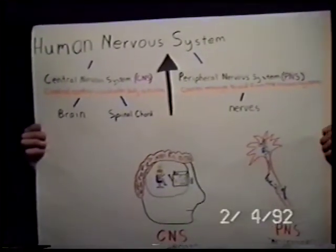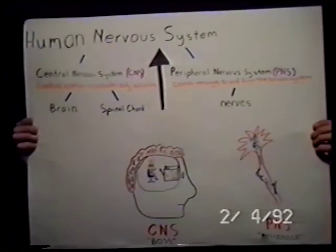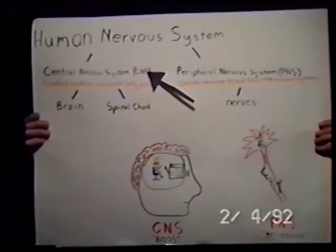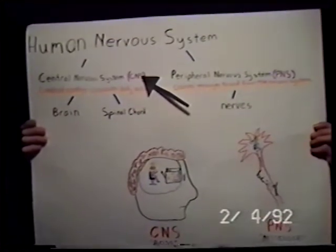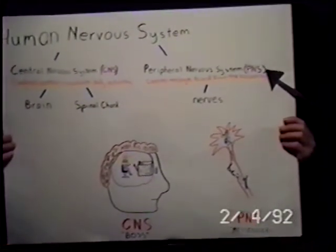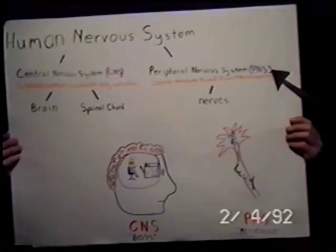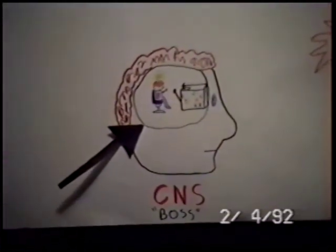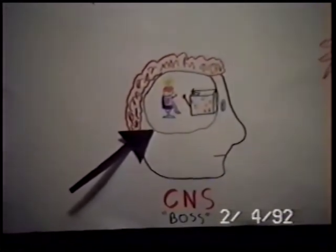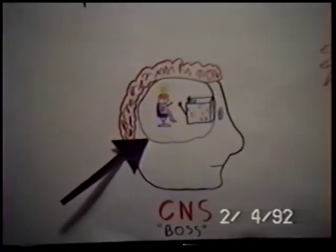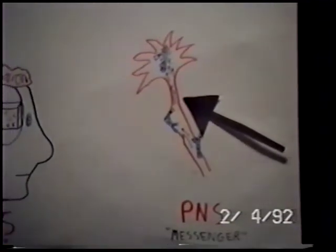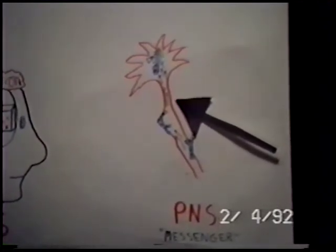The Human Nervous System is like a tree. It branches out into two main parts at first: the Central Nervous System, which is the control center and coordinates body activities, and the Peripheral Nervous System, which carries messages to and from the nervous system. Now, the Central Nervous System, or the CNS, is said to be the leader or the boss. The Peripheral Nervous System, or the PNS, is said to be a workman or a messenger.